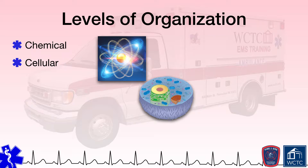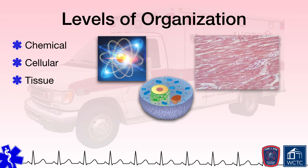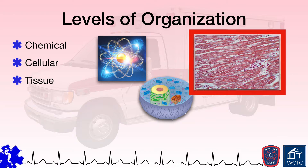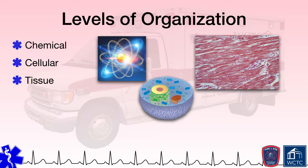When specific cells with similar functions are joined together, they form tissues, the third level of organization in the body. These tissues perform specific functions within the body. As an example, this particular picture highlighted here is of cardiac muscle tissue. The job of these cells is to shorten and lengthen, contract and relax in unison to create the mechanical pumping force of the heart.